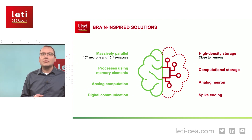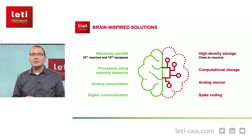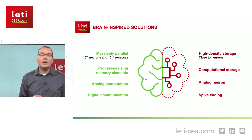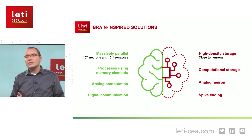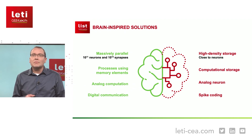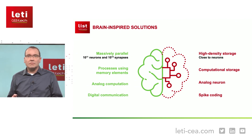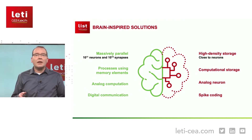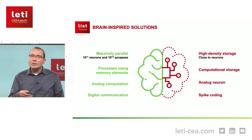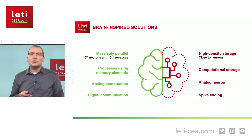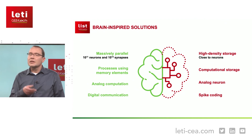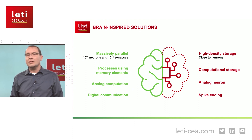Thirdly, the computation engines are analog: neurons accumulate synaptic inputs in their soma and fire when a given threshold is reached. And finally, communication is digital — it comes in the form of spikes. Spikes are unary events; they are not even binary. There was an event or not — there is no value associated with the height or the length of the voltage pulse. This coding type is robust to noise, even over long distances, which is why it was chosen by evolution. But it is also sparse, and we know from information theory that sparse communication in time maximizes energy efficiency.